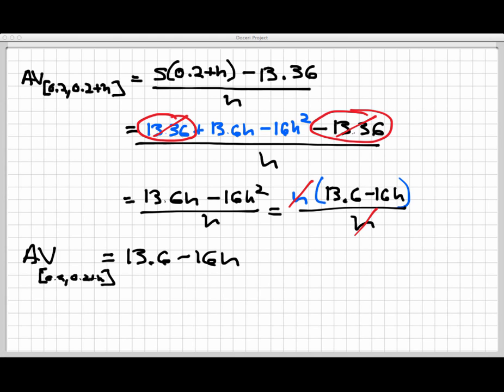This is the average velocity from 0.2 to 0.2 plus h. So what this allows me to do is if I have any time interval at all that starts at 0.2, no matter how wide it is, if I know how long that interval is, that's the h value. I can very easily calculate the average velocity.